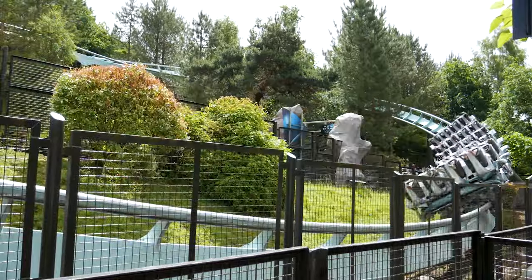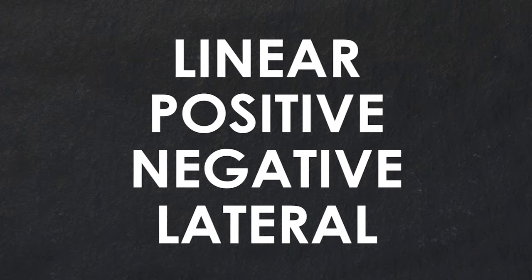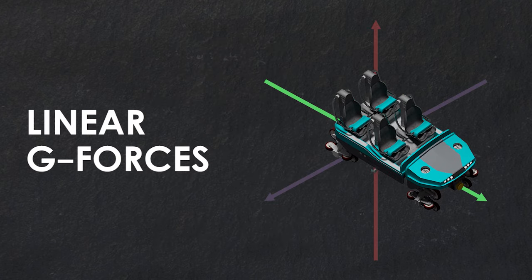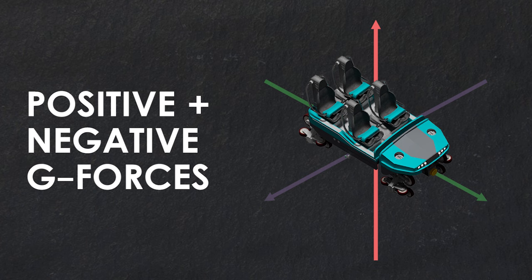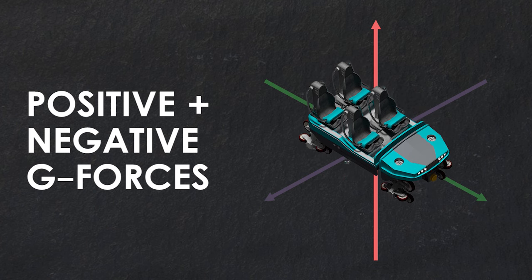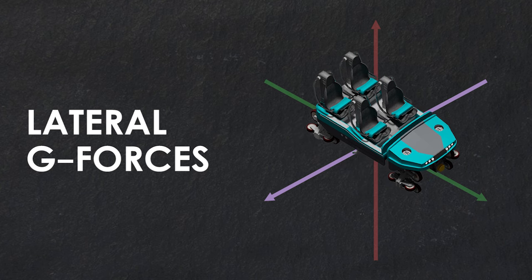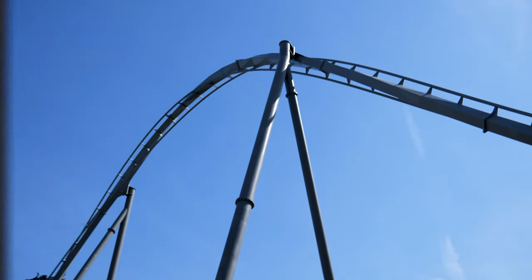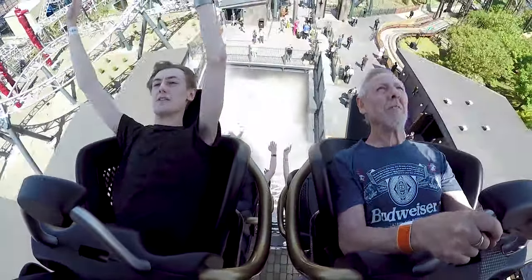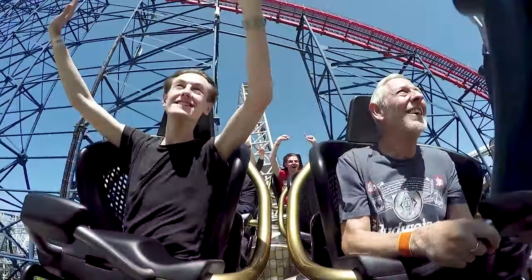To recap, we have 4 main g-force groups: linear g-forces, which act in the forward and backward directions; positive and negative g-forces, which act in the upwards and downwards directions respectively; and lateral g-forces, which act in the left and right directions. Each group causes riders to move in the opposite direction to which the g-force acts — such as rising up out of your seat as you experience downward-pointing negative g-forces.